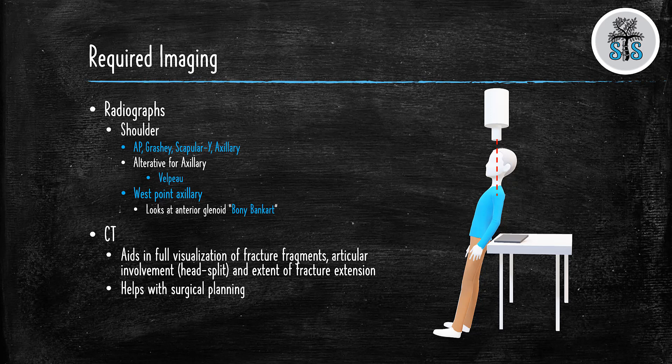You can get a CT scan, especially if it's a fracture that has multiple parts. You want to see if there's any articular involvement, looking for head split fractures, because remember, it's important to see for a head split, because of humeral head ischemia. And you want to look at the extent of fracture extension. This also helps with surgical planning, when you're looking at how many parts of the fracture that actually are. And MRIs usually aren't ordered, but we just put it in here for completion's sake.